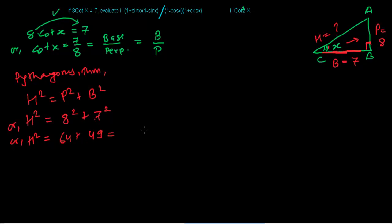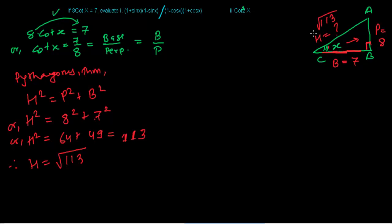Calculating: 8² = 64 and 7² = 49, so h² = 64 + 49 = 113. Therefore the hypotenuse h = √113. Now we can find all the trigonometric ratios we need.